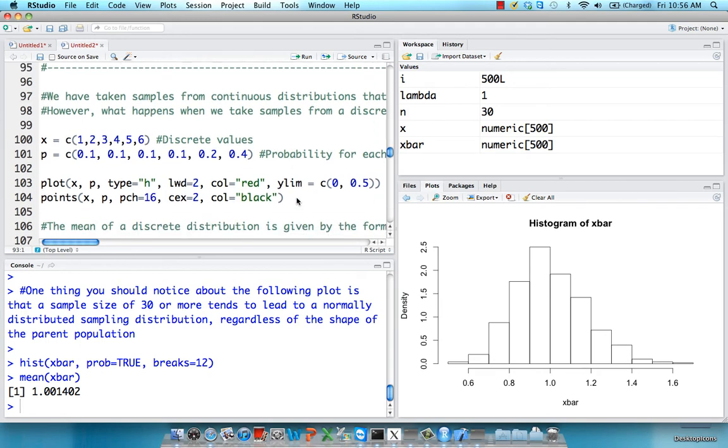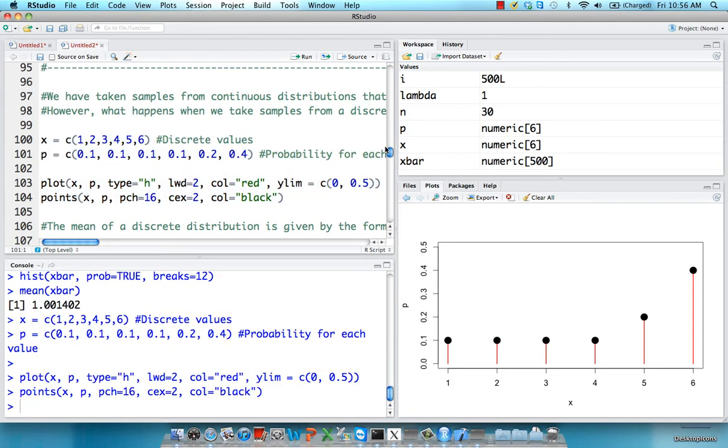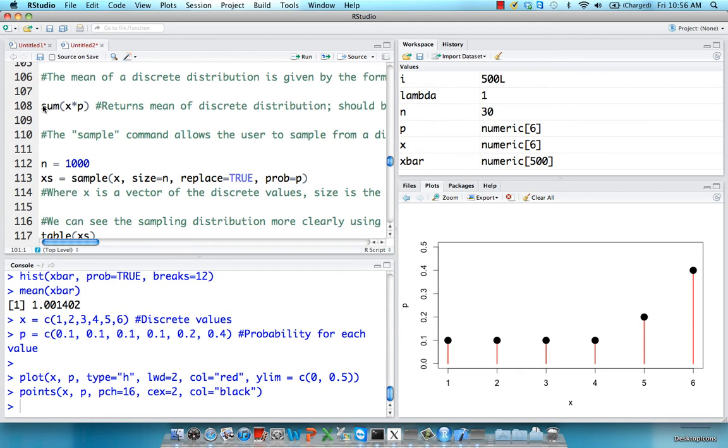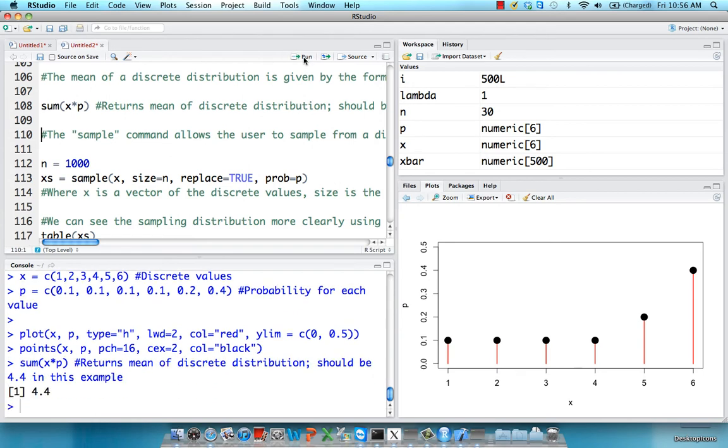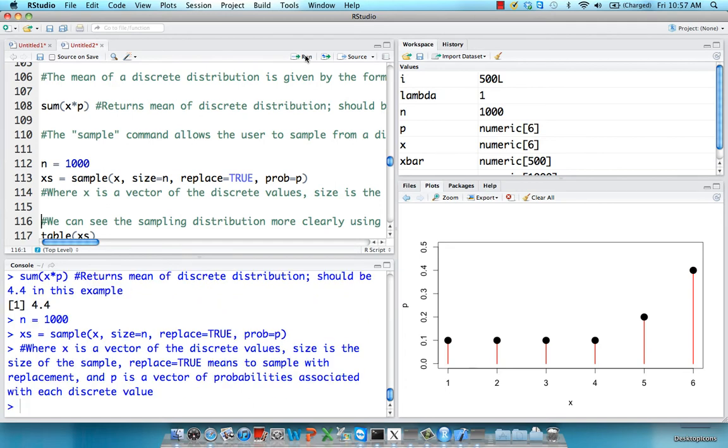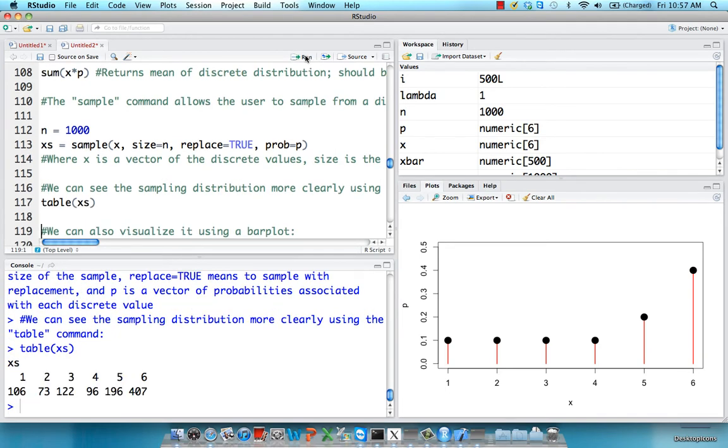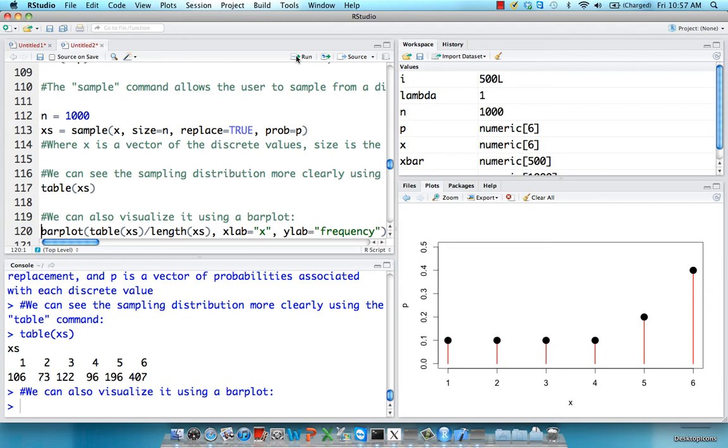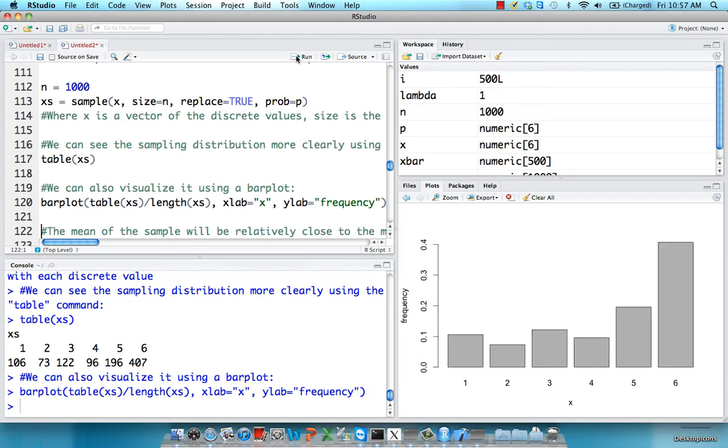Lastly, let's do the same thing with a discrete population. So here we have 6 values, and each one is associated with a different probability of being sampled. And the mean is defined as the sum of each value multiplied by its probability. So if we sample 1,000 random numbers and plot it as a table, we have probabilities, percentages roughly reflecting the probability of each of these being sampled. And we can show this as a bar plot.